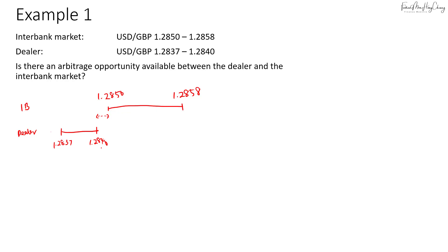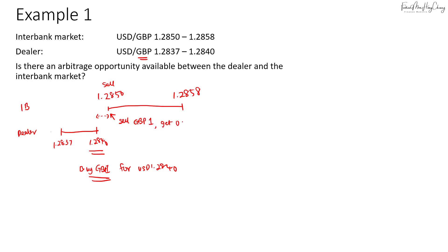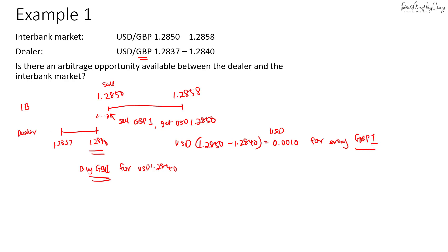So how do we do it? It's simple — always remember buy low and sell high. When I say buy, I'm referring to the base currency, which is pound. I'm going to buy one pound for USD 1.284 from the dealer, and with this one pound I can now sell it in the interbank market and get USD 1.285. So your arbitrage profit in this case will be 1.285 minus 1.284, which is 0.0010 US dollars for every pound.